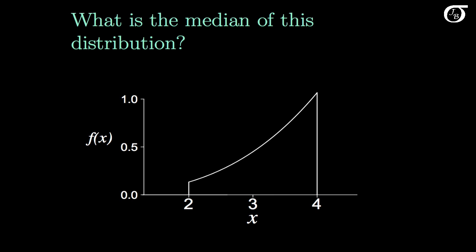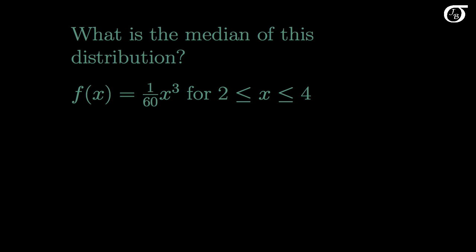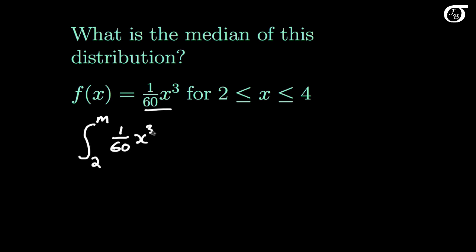What is the median of this distribution? The median is the value of the variable that splits the area into halves — 0.5 on each side. I'm going to call that value m. To find m, we note that the area to the left of m is 1/2. So the integral from minus infinity to m of f dx must equal 1/2. Since f(x) is 0 for values of x less than 2, we integrate from 2 to m of (1/60) times x cubed dx, and we need this to equal 1/2.